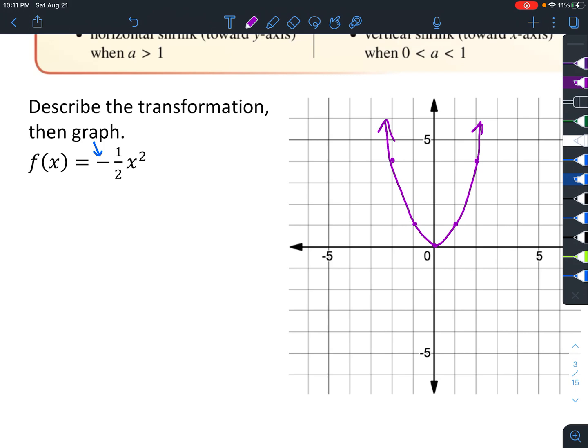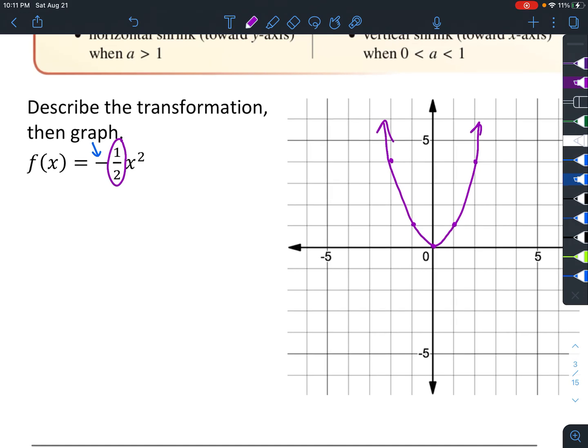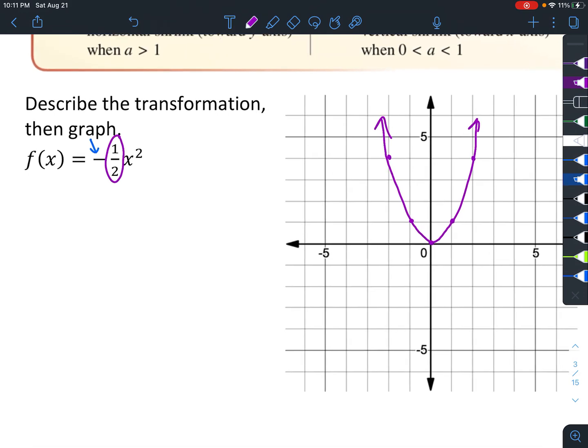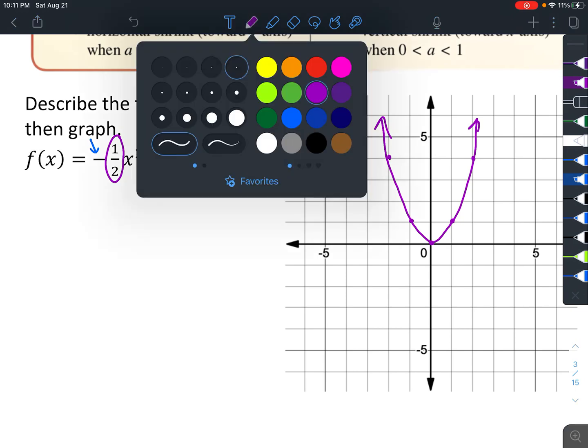We already know it's going to reflect over the x-axis—it's going to flip upside down. But it also has a vertical shrink. Notice it basically cuts whatever the x² is in half. So find the x² first, because the 1/2 isn't included in the squared, and then cut it in half.